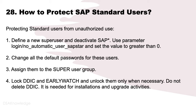How do you protect SAP standard users? Number 1: Define a new super user and deactivate SAP*. Use parameter login/no_automatic_user_sapstar and set the value to greater than zero. Number 2: Change all the default passwords for these users. Number 3: Assign them to the super user group. Number 4: Lock DDIC and EarlyWatch and unlock them only when necessary. Do not delete DDIC — it is needed for installations and upgrade activities.